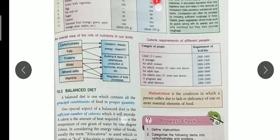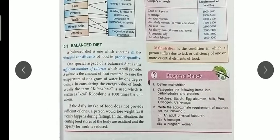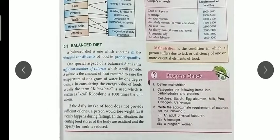A balanced diet is a diet which contains all the principal constituents of food in proper quantities. The principal constituents include proteins, carbohydrates, vitamins, minerals, and fats. We should always take a balanced diet.